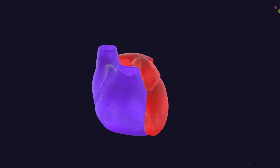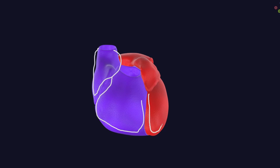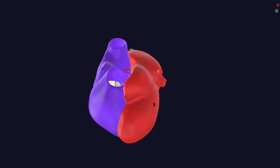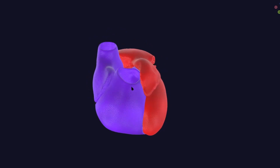Here is the heart with the atria and ventricle. We have the right atria, the right ventricle, the left ventricle, and behind that somewhat is the left atrium. All these structures are shown in the 3D model of this human heart.